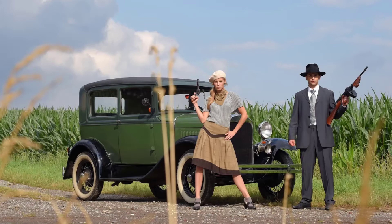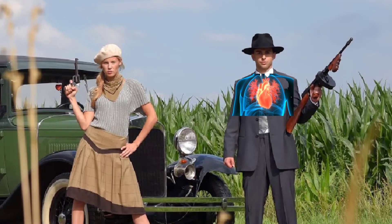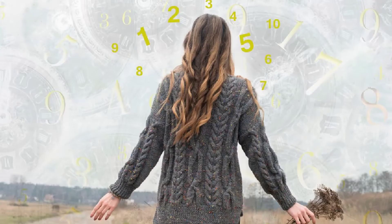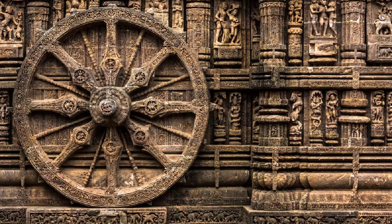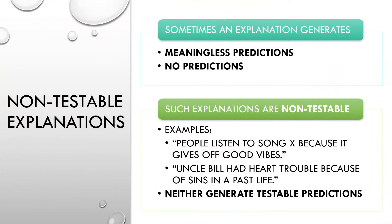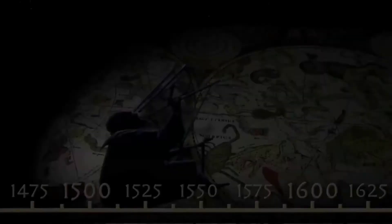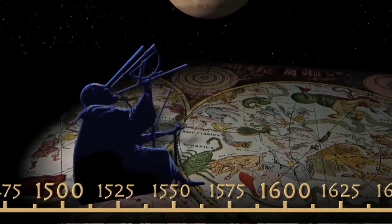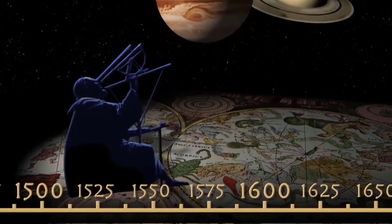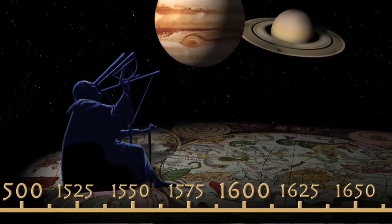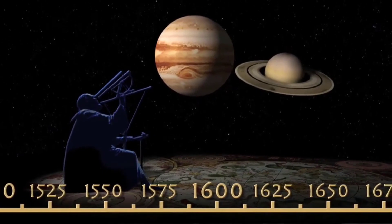Or someone might want to explain Uncle Vinny's heart condition as a result of his crimes in a past life. We would expect to find more heart problems among past life sinners — but how do we identify members of that group? Who counts as a past life sinner? The point is, neither the 'good vibes' nor the past life theory generate testable predictions. And note that some predictions are difficult or impossible to test not due to meaninglessness, but due to practical technical limitations — and what might be untestable now may be testable in the future.